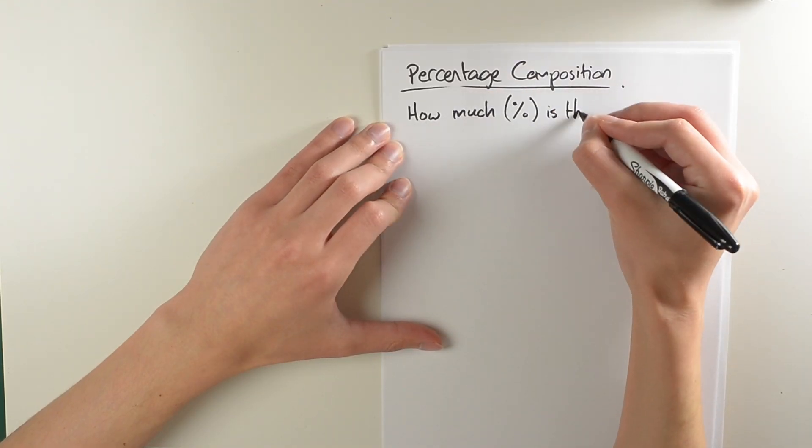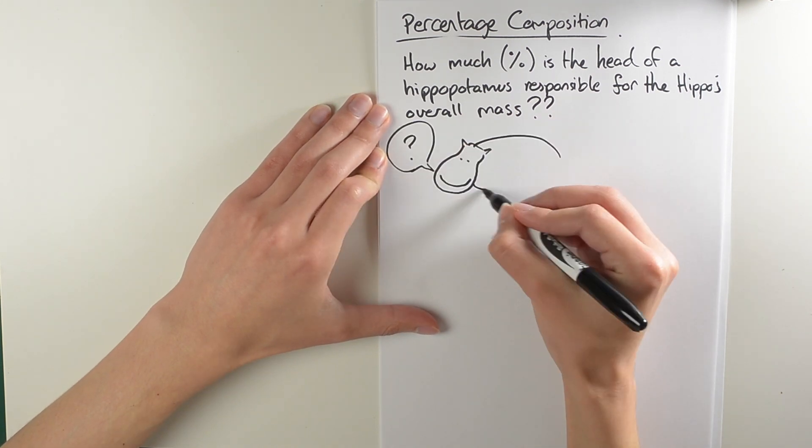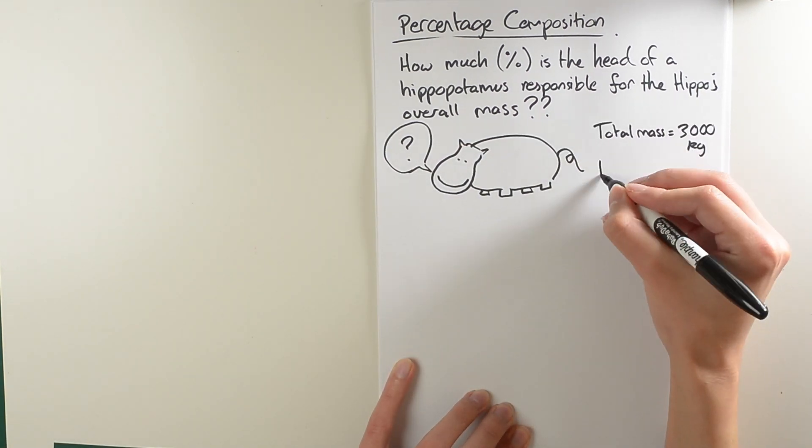Calculating these percentages is really quite easy, but to make things fun I've decided to pick a really fat hippopotamus. How much percent is the head of a hippopotamus responsible for the hippo's overall mass if the hippo's head weighs 900 kilos and the whole body weighs 3,000 kilos?